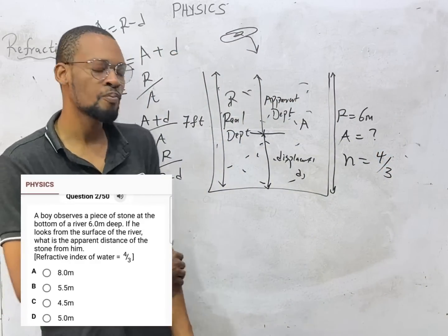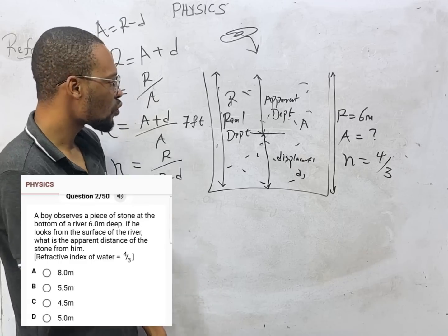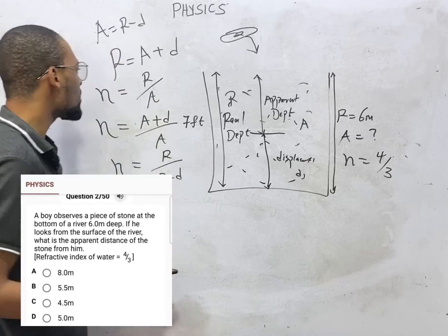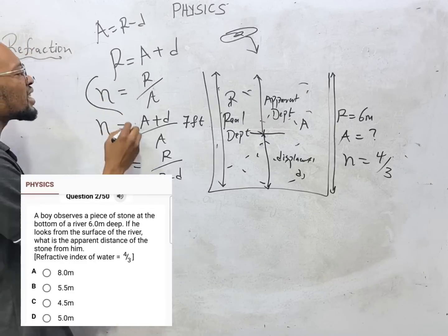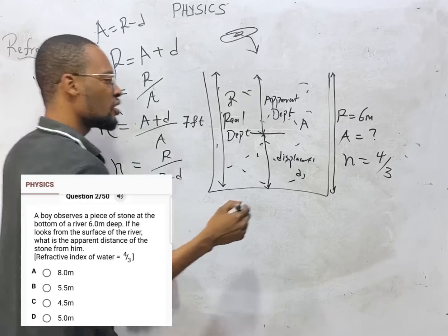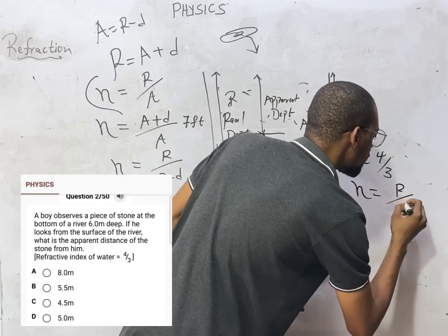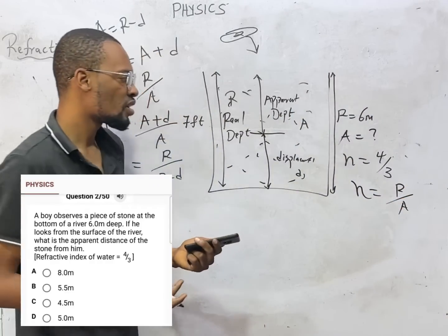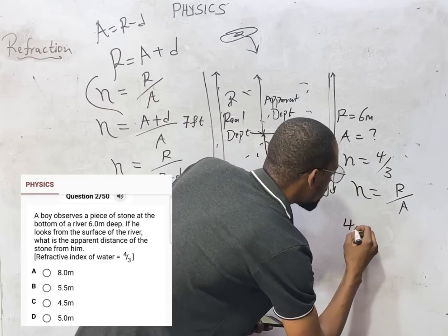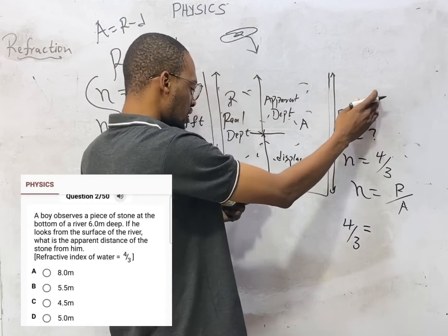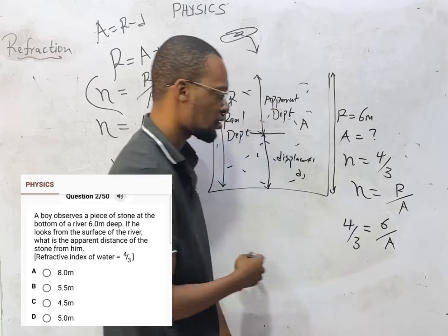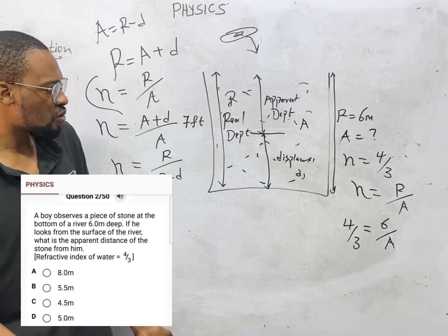Food is ready — we have the refractive index, the real depth, and we need to find the apparent depth. The refractive index equals real depth over apparent depth. So four over three equals six meters over apparent depth. To get apparent depth, we cross-multiply: four times A equals six times three, which is 18.